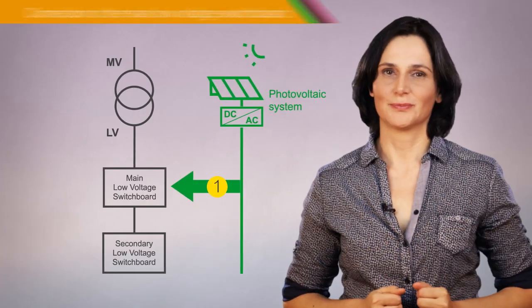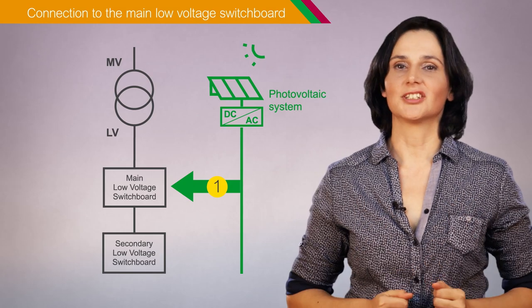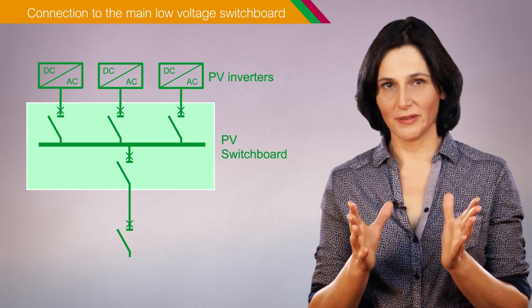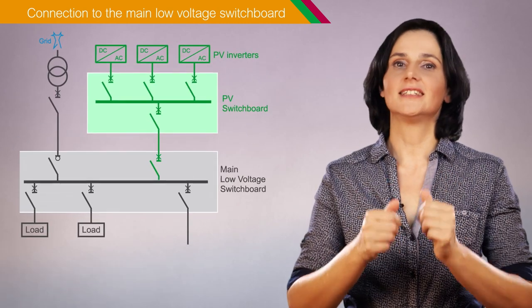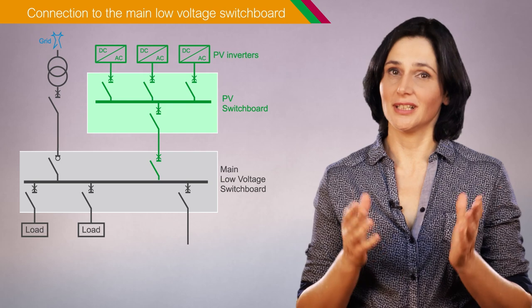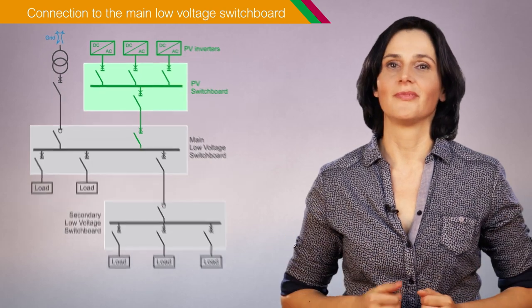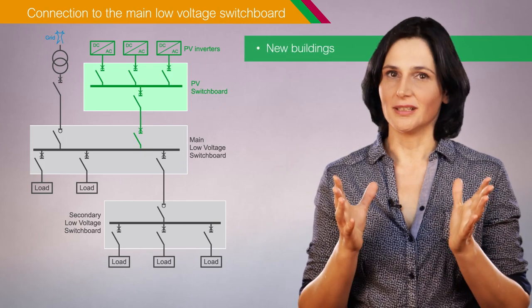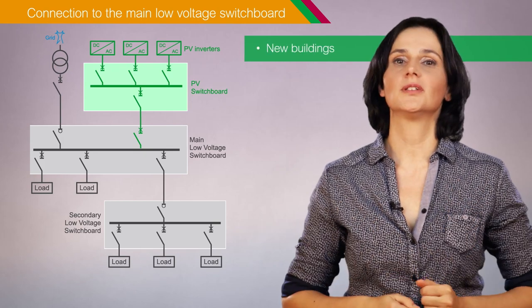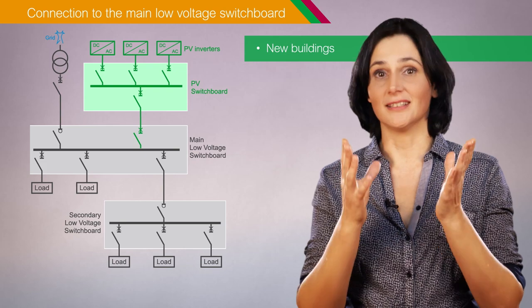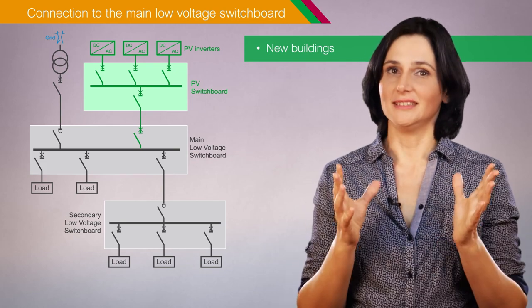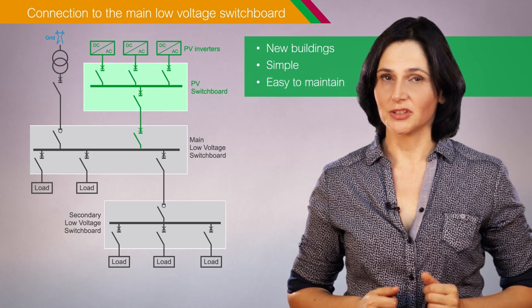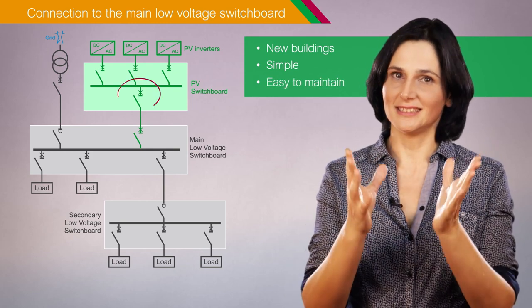First architecture. In the first architecture, the photovoltaic production, shown here with a group of three photovoltaic inverters, is connected to the main low voltage switchboard of the electrical installation. This architecture is suitable for new buildings where the installation is designed to take photovoltaic production into account at an early stage. It's simple and easy to maintain because the photovoltaic production can be disconnected at a single point.